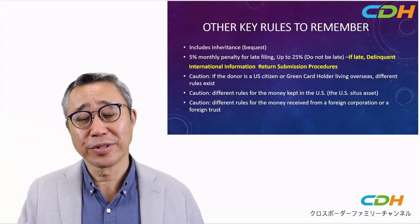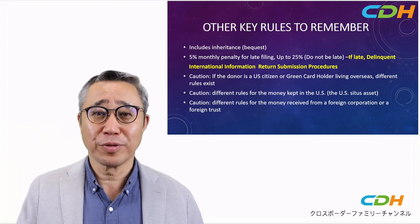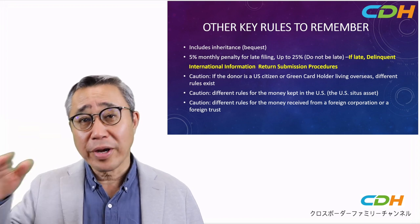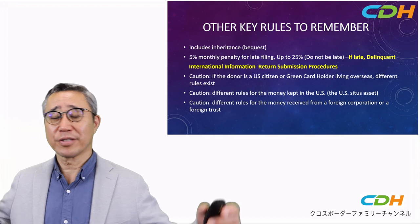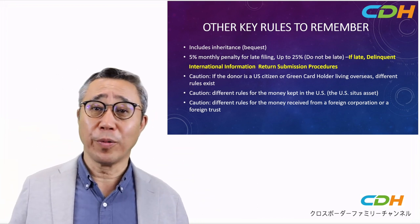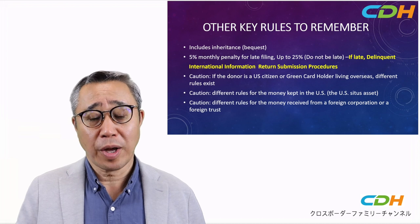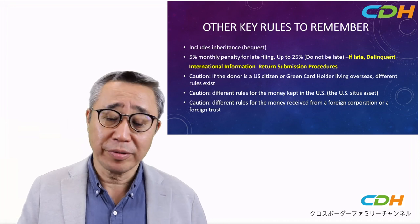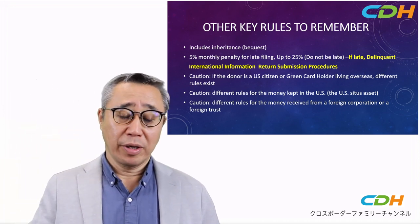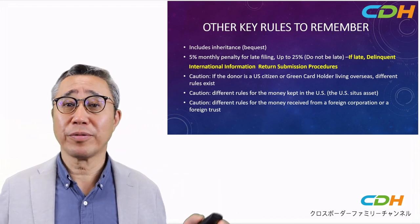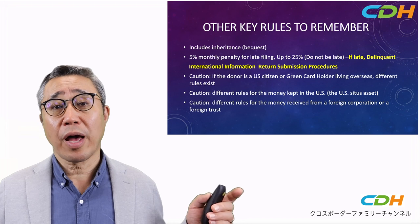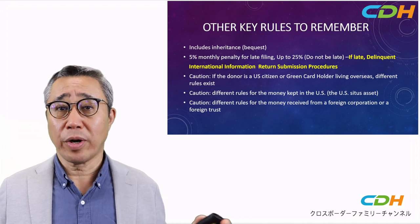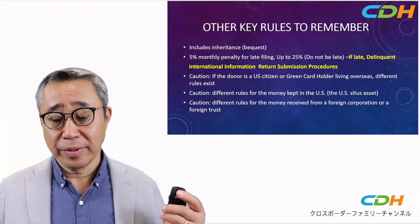There are also different rules for money received from a foreign corporation or foreign trust — the threshold there is probably a lot lower than $100,000, so you need to be extremely careful. You don't want to miss reporting and pay unnecessary penalties to the IRS. As far as the last point is concerned, if you receive something, please check with a credible CPA to find out if you need to report Form 3520 or not — that's a very important point.